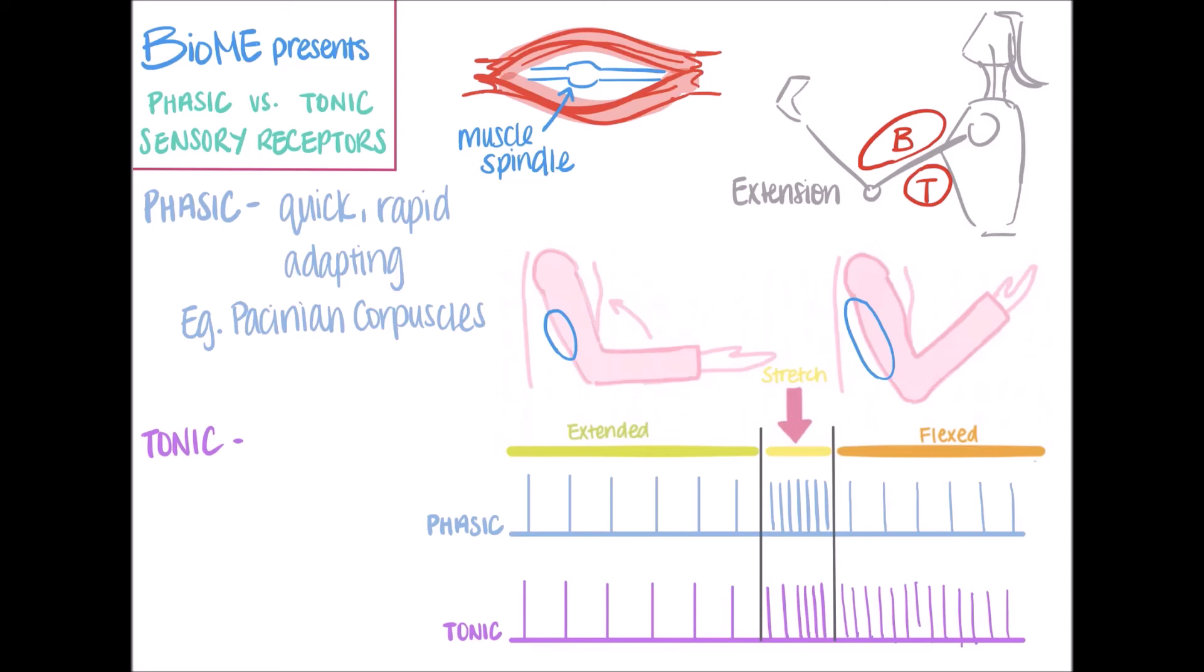Another example of a phasic receptor is the group 1a fibers in muscle spindles that we just talked about, which pick up the rate of change in muscle length.